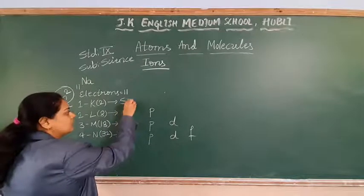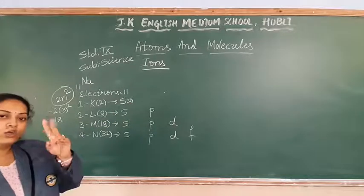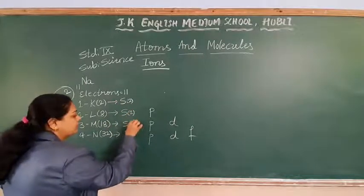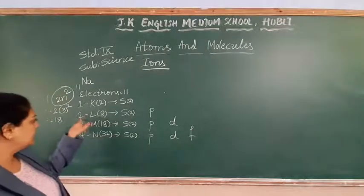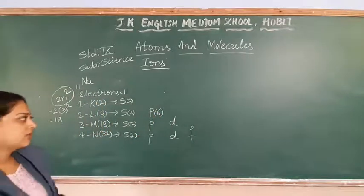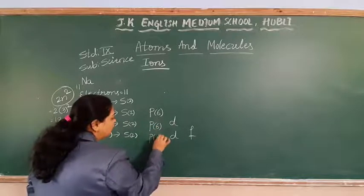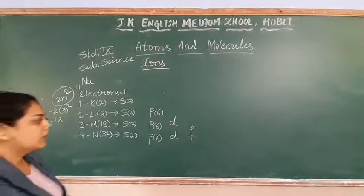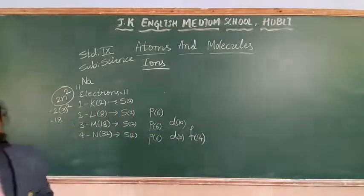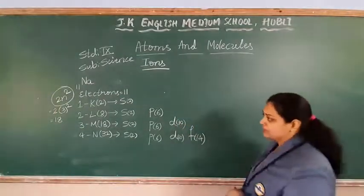The S subshell capacity is 2 electrons — it can accumulate 2 electrons, whether it is the first, second, third, or fourth shell. The P subshell capacity is 6 electrons — 6 plus 2 gives L shell capacity of 8. D subshell capacity is 10, and F subshell capacity is 14. Just remember these to write the electronic configuration.